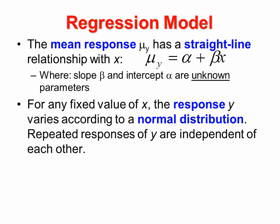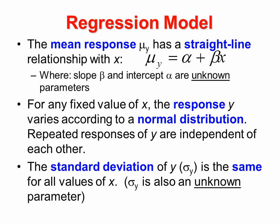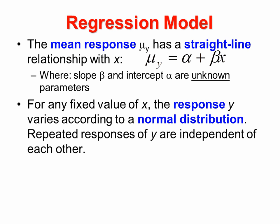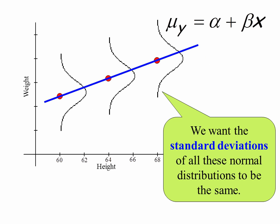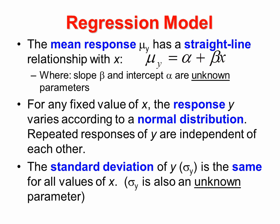Repeated responses of y are independent of each other. So one woman's weight at 5 feet is obviously different from another female who is 5 feet — they may weigh something different, and that weight difference is independent of one another. And lastly, the standard deviation of y, sigma sub y, is the same for all values of x. So sigma sub y is also an unknown parameter, but we're looking for it to be the same across all values.